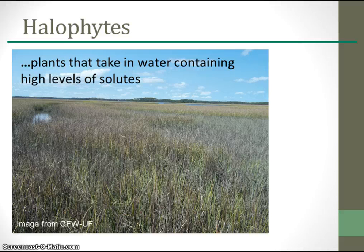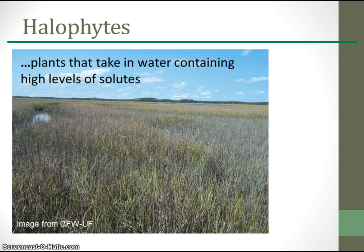Saline water also presents challenges for plants. Halophytes are plants that take in water containing high levels of solutes. For a halophyte to maintain a water potential gradient, they may employ one or several strategies: accumulating high levels of ions within their cells, especially leaves; diluting solutes with stored water; secreting salt onto the leaf surface to be washed away by rainwater; or developing filtering root membranes to regulate salt intake. The degree of salt tolerance varies greatly in different halophytes.